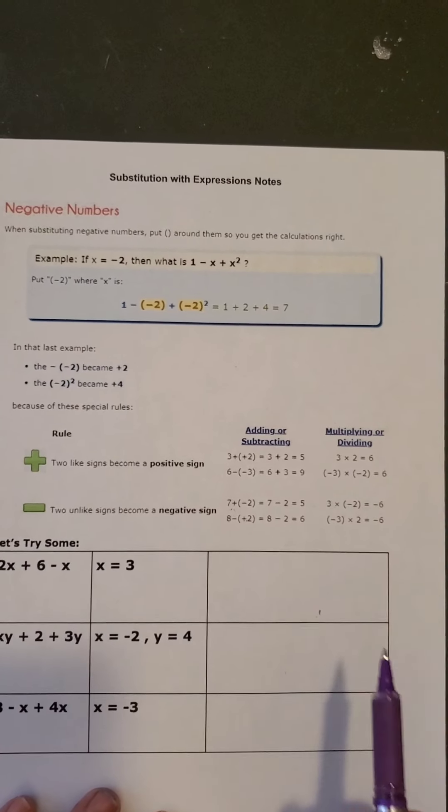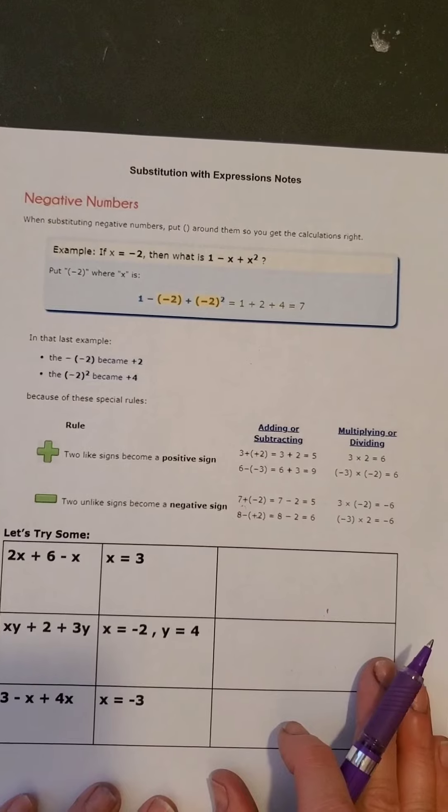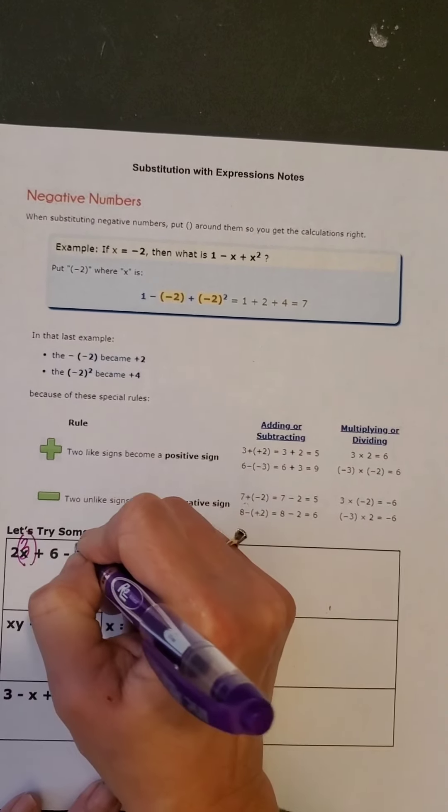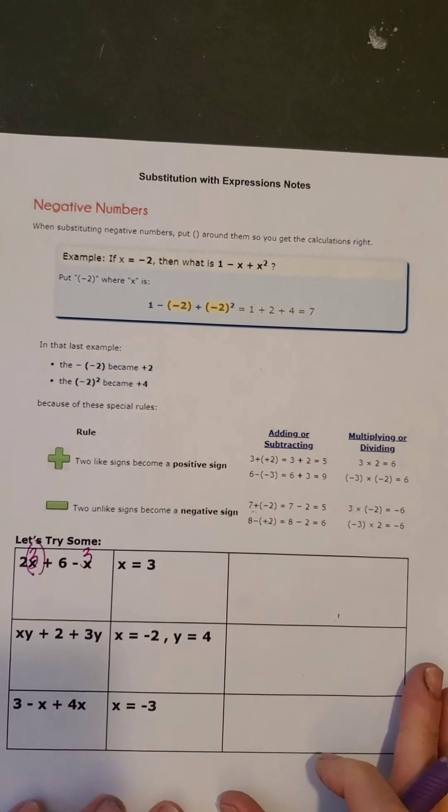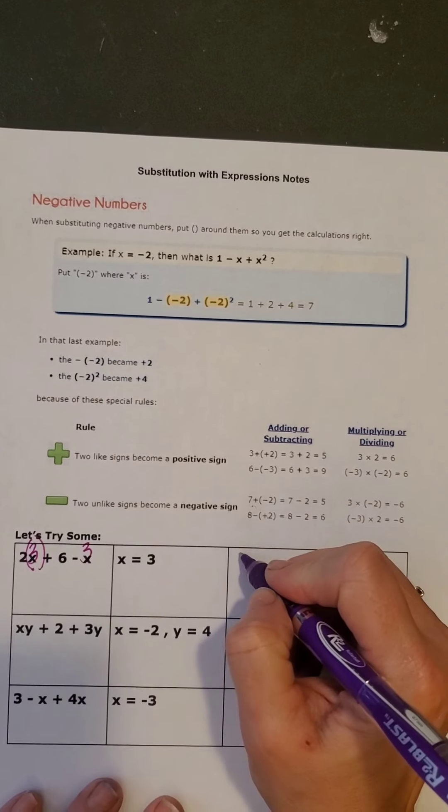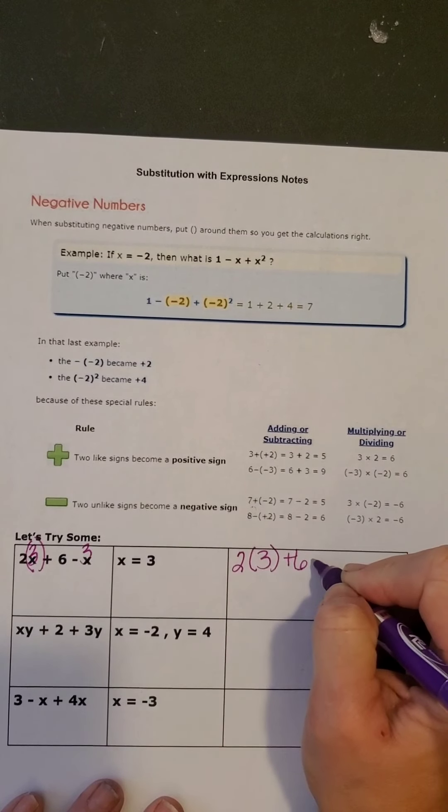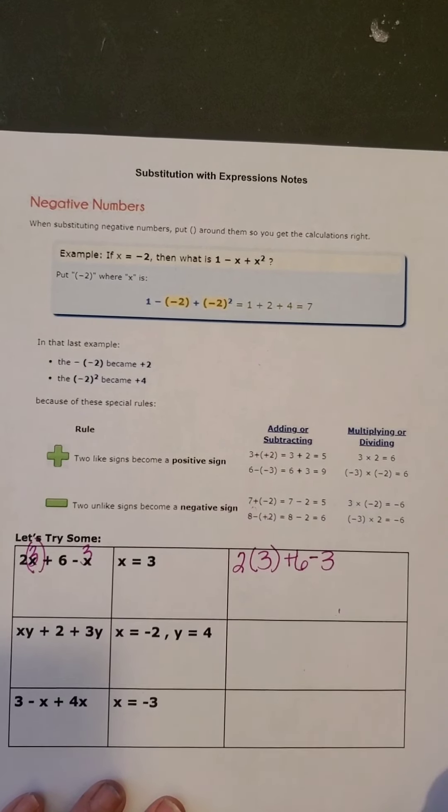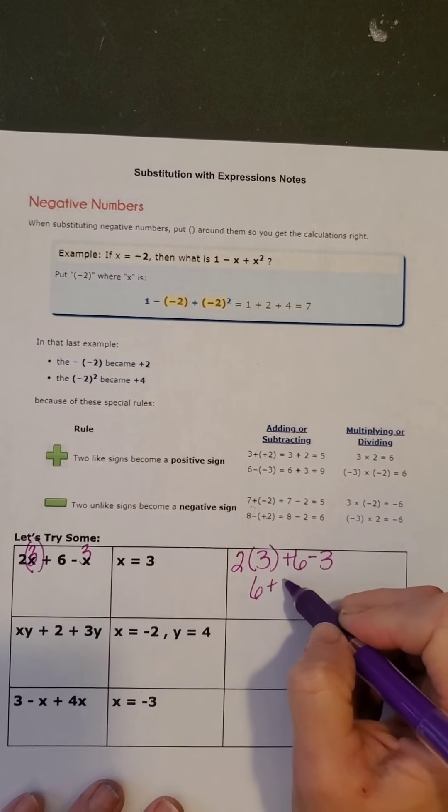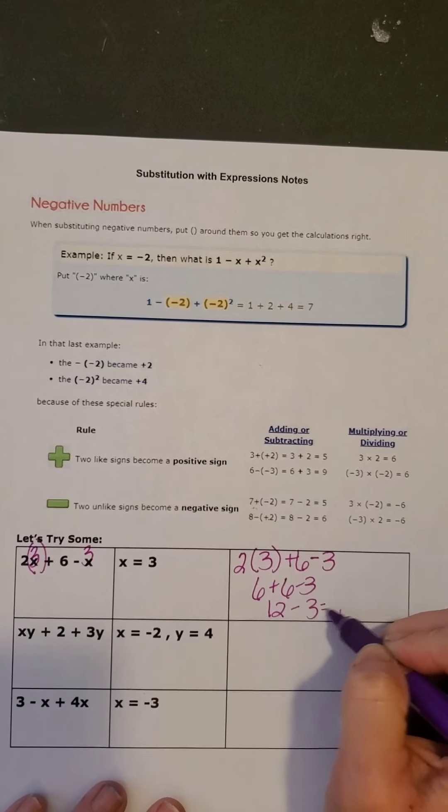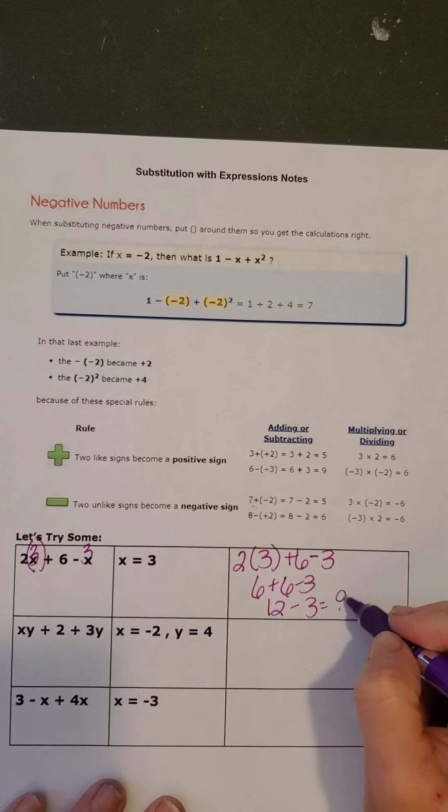So 2x plus 6 minus x and x is equal to 3. So what I am going to do is I am going to put my 3 in for x on top of that. And then I am going to come over here, 2 times 3 plus 6 minus 3. That's 6 plus 6 minus 3, 12 minus 3 is 9.